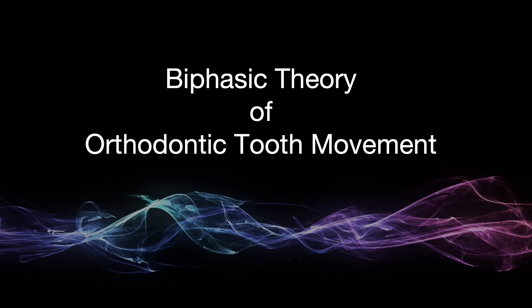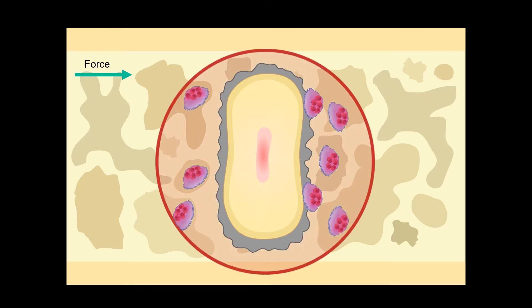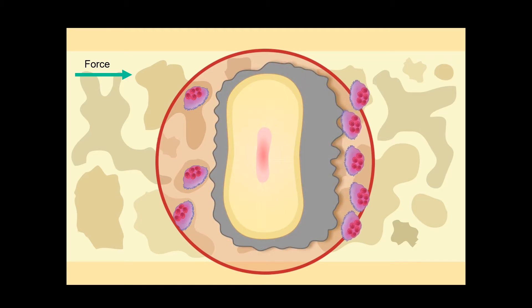Let's summarize the content of the previous discussion and today's discussion as one biphasic theory. In response to application of orthodontic forces, inflammatory markers appear around the tooth, and those inflammatory markers activate the osteoclasts. If you look at histologic sections of a tooth that has received orthodontic forces, you can see activation of osteoclasts all around the root.